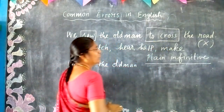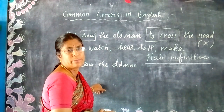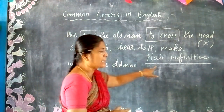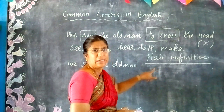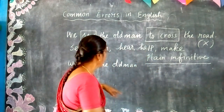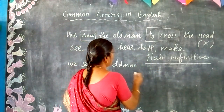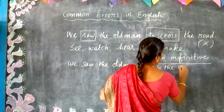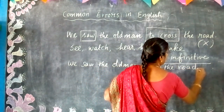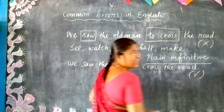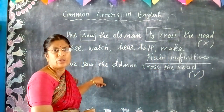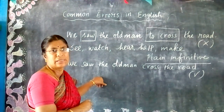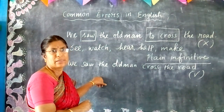You cannot write 'to cross' because it is a to-infinitive. You have to write only a plain infinitive — that means without 'to'. The correct sentence is: We saw the old man cross the road. This is the correct usage of plain infinitives. Let us see a few more examples next time. Thank you.